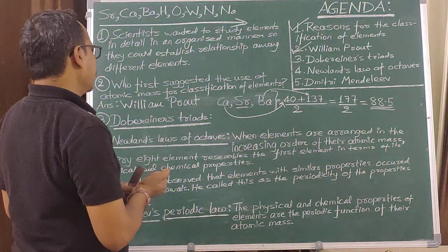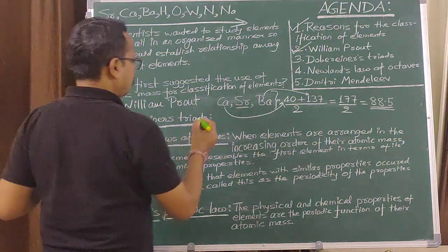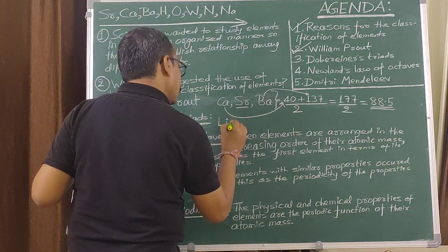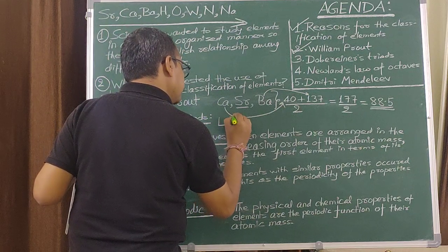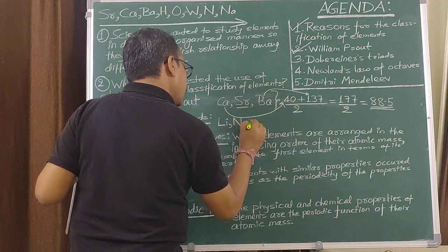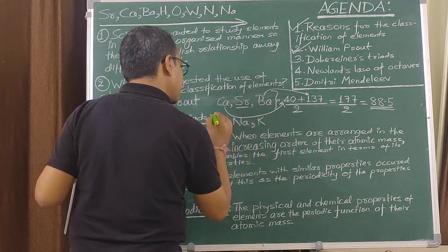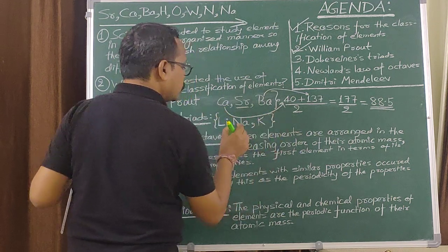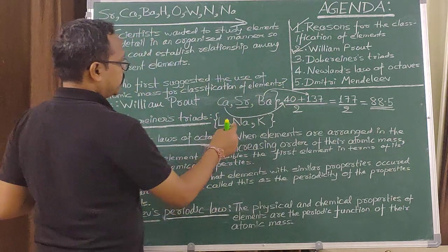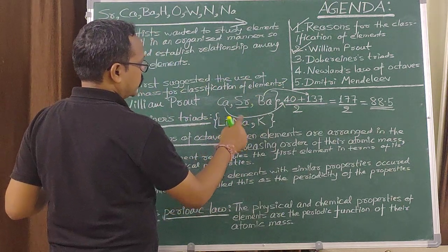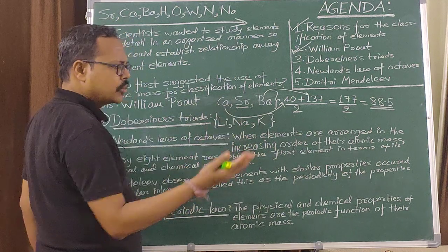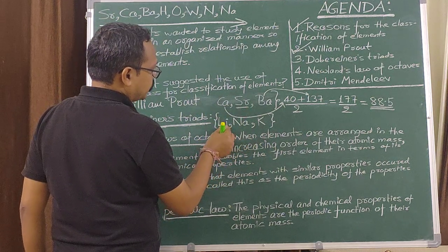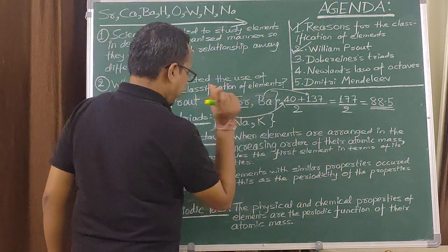Similarly, there are other triads. For example, lithium, sodium, and potassium also form a triad. The atomic weight of sodium is nearly equal to the arithmetic mean of the atomic weights of lithium and potassium.